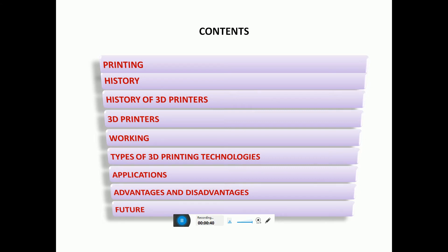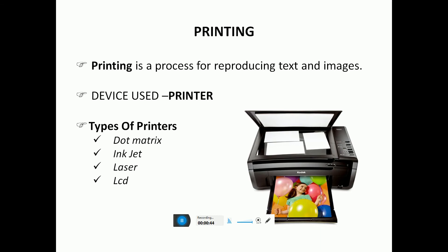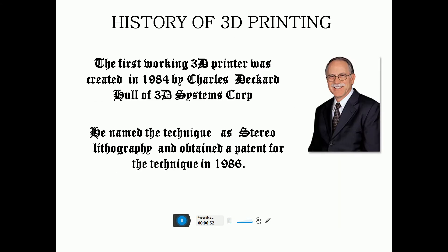We will also cover the advantages and disadvantages of 3D printing. Printing is a process for reproducing text and images, using a device called a printer. Types of printers include dot matrix, inkjet, and laser printers. The history of 3D printing begins with the first working 3D printer, created in 1984 by Charles Decoder and 3D Systems Corporation.